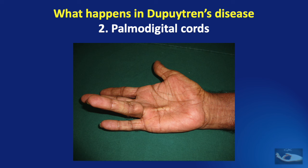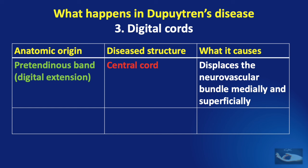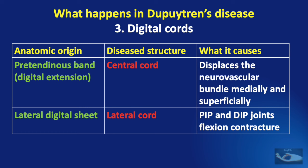The digital cords could develop when there is involvement of the digital extension of the pre-tendinous band, and become what is known as the central cord. This central cord can cause contractures of the proximal interphalangeal and distal interphalangeal joints, and also displace the neurovascular bundles medially and superficially. The lateral digital sheath, when involved, is known as the lateral cord, and this causes PIP and DIP joint flexion contracture, as shown in this clinical example.